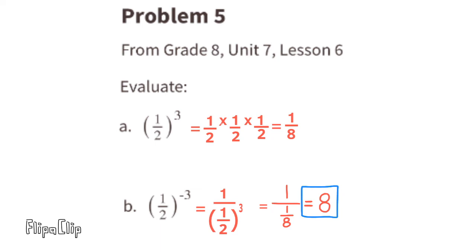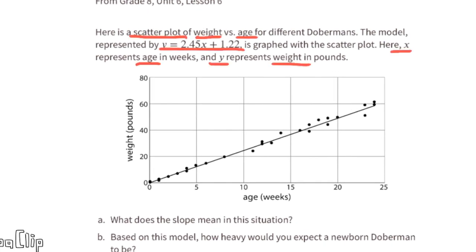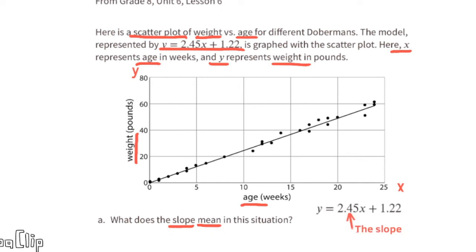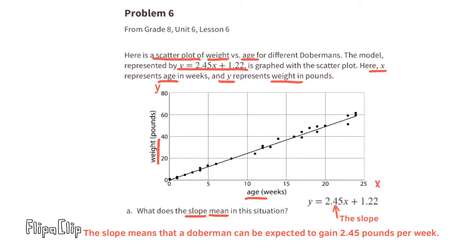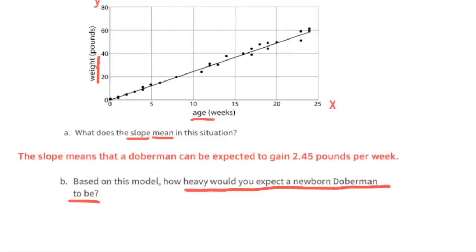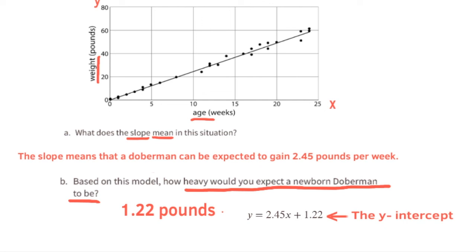Problem number six from eighth grade Unit 6, Lesson 6. Here is a scatter plot of weight versus age for Dobermans. The model y = 2.45x + 1.22 is graphed with the scatter plot, where x is age in weeks and y is weight in pounds. The slope of 2.45 means Dobermans gain about 2.5 pounds per week. Based on the y-intercept of 1.22, a newborn Doberman would be expected to weigh approximately 1.22 pounds at birth.